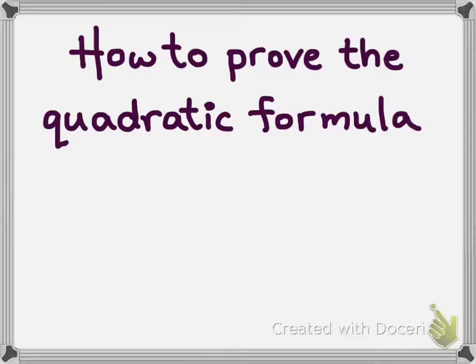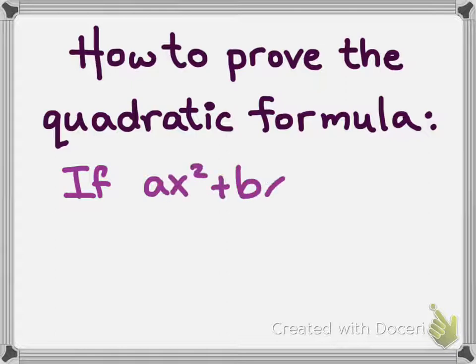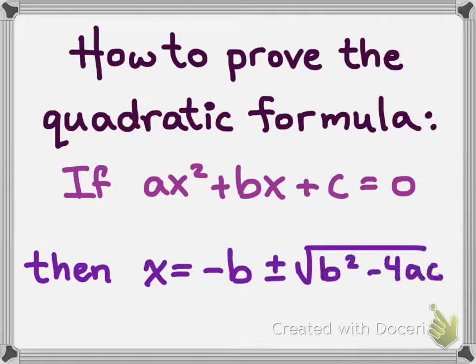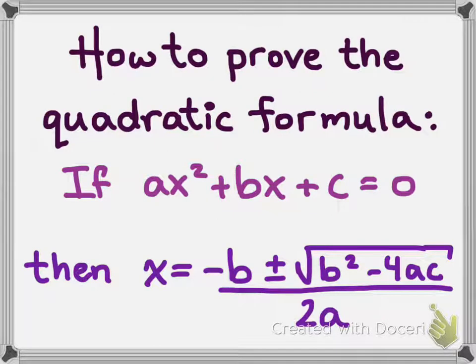This lesson is on how to prove the quadratic formula, which states: if ax squared plus bx plus c equals 0, then x is equal to negative b plus or minus the square root of b squared minus 4ac, all over 2a. And of course, this only works when a is not equal to 0.